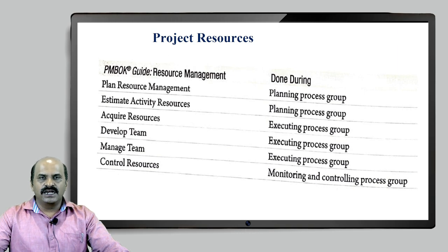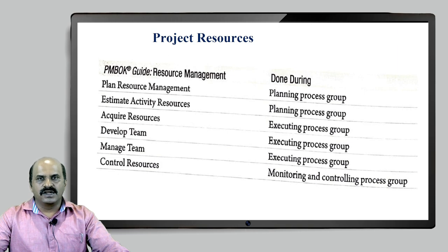Based on that estimation, we have to hire the count of resources, which happens in the executing stage, and we have to develop the human resource by giving trainings, also under the executing stage. Then we have to manage the team based on the resource management plan. Control is also very important — whatever activity has been completed by a particular resource needs to be monitored and controlled for quality as well.